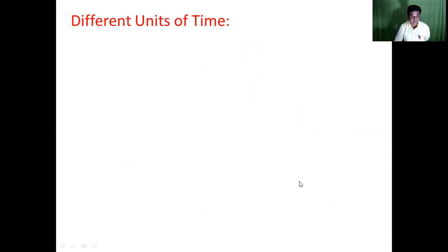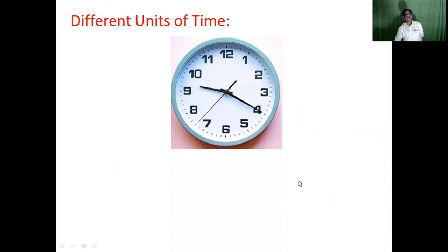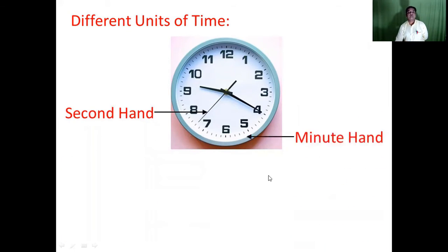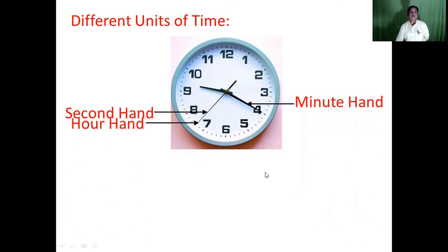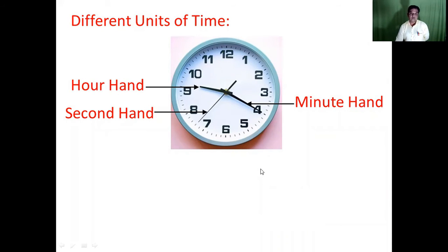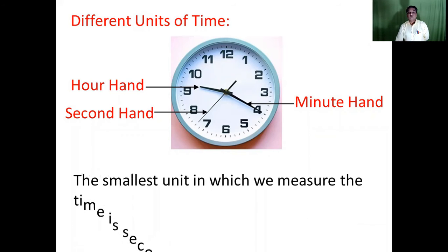So what are the different units of time? When we take a look at a watch or a clock, we are going to see three hands. First it's the second hand, second the minute hand, and the third one is the hour hand. The second hand will move by one small division on the dial for a single second. So the second is the smallest unit of time.